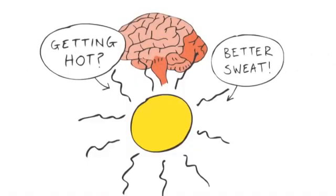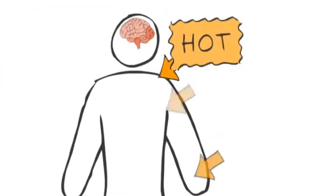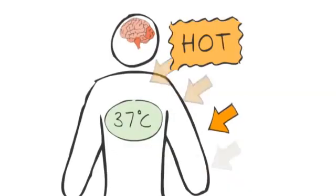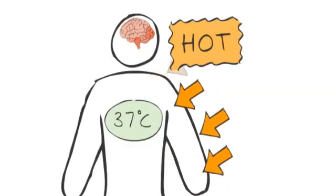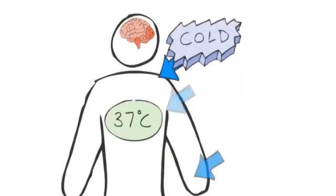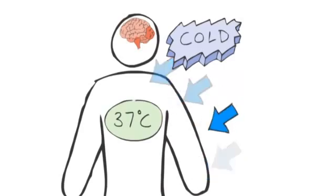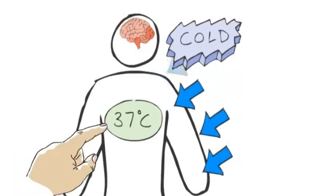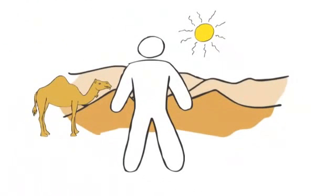The thermoregulatory centre in the brain controls our body temperature. This centre can detect the temperature of blood flowing through the brain and also receives impulses from temperature receptors in the skin, which help it keep body temperature at around a constant 37 degrees celsius. Pretty impressive. But why bother?